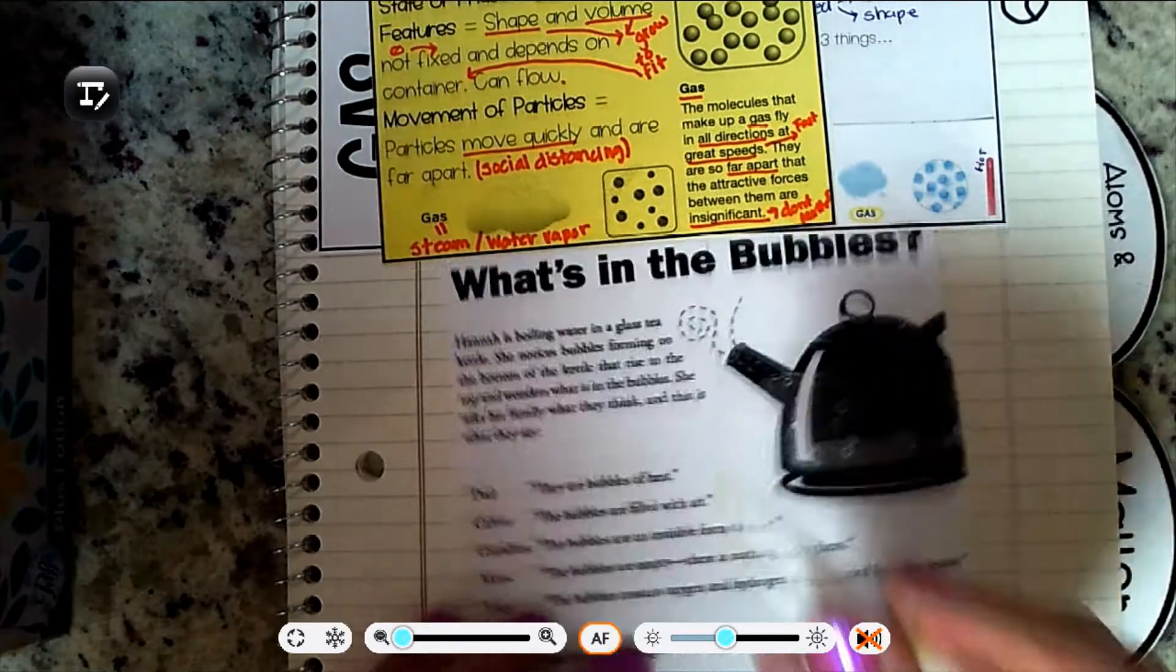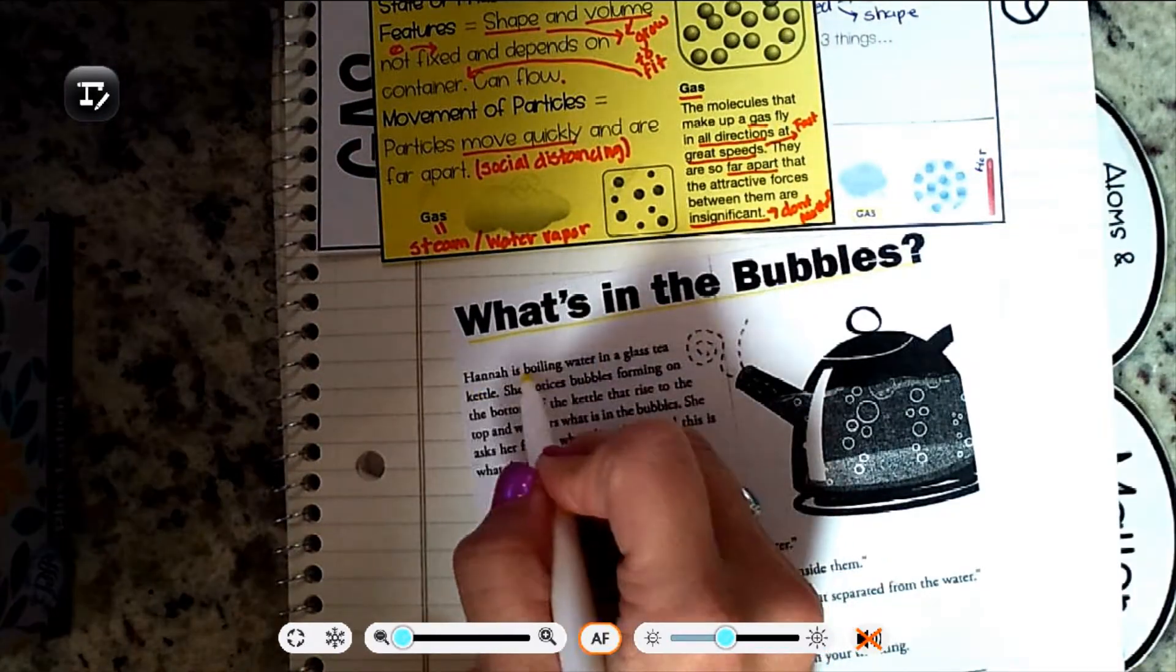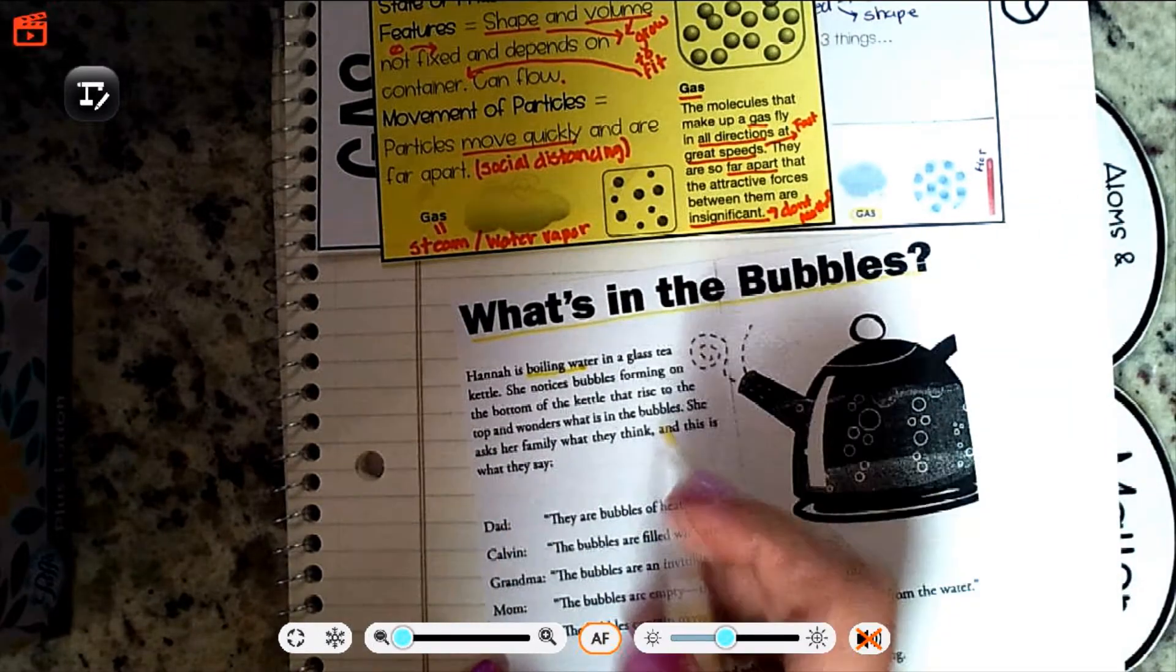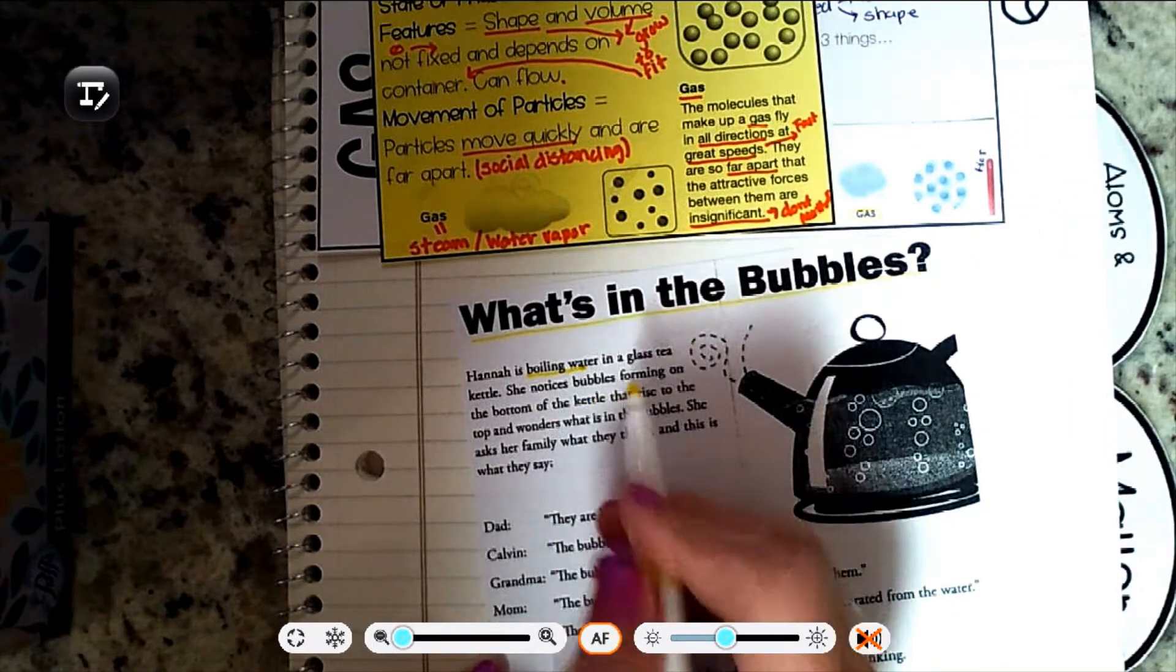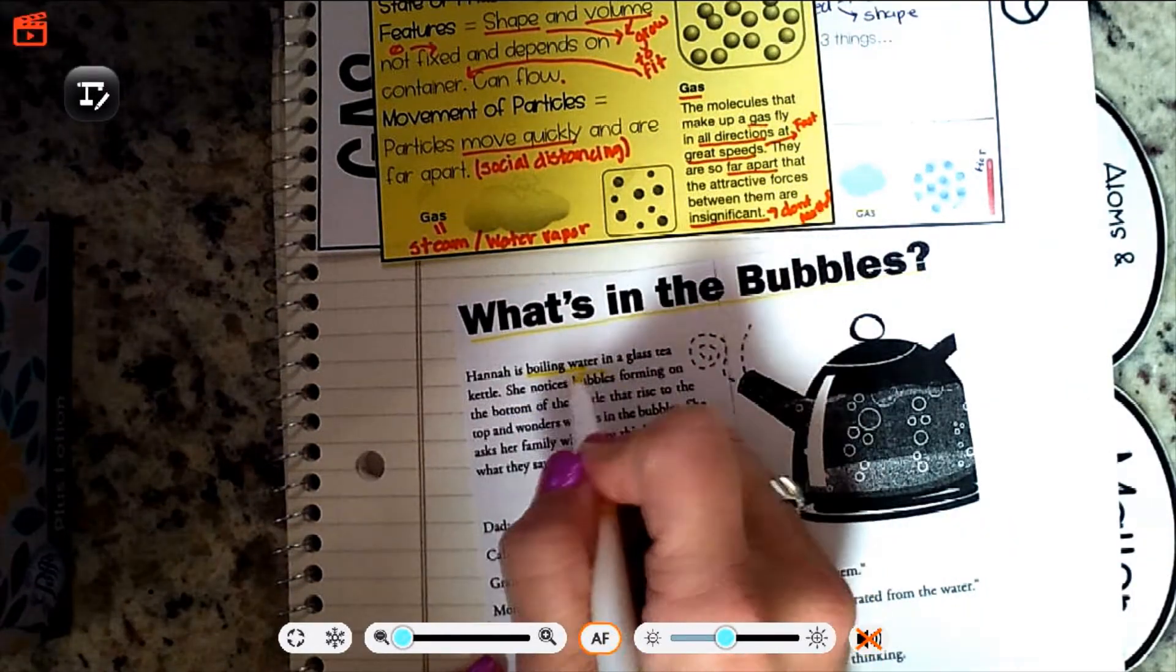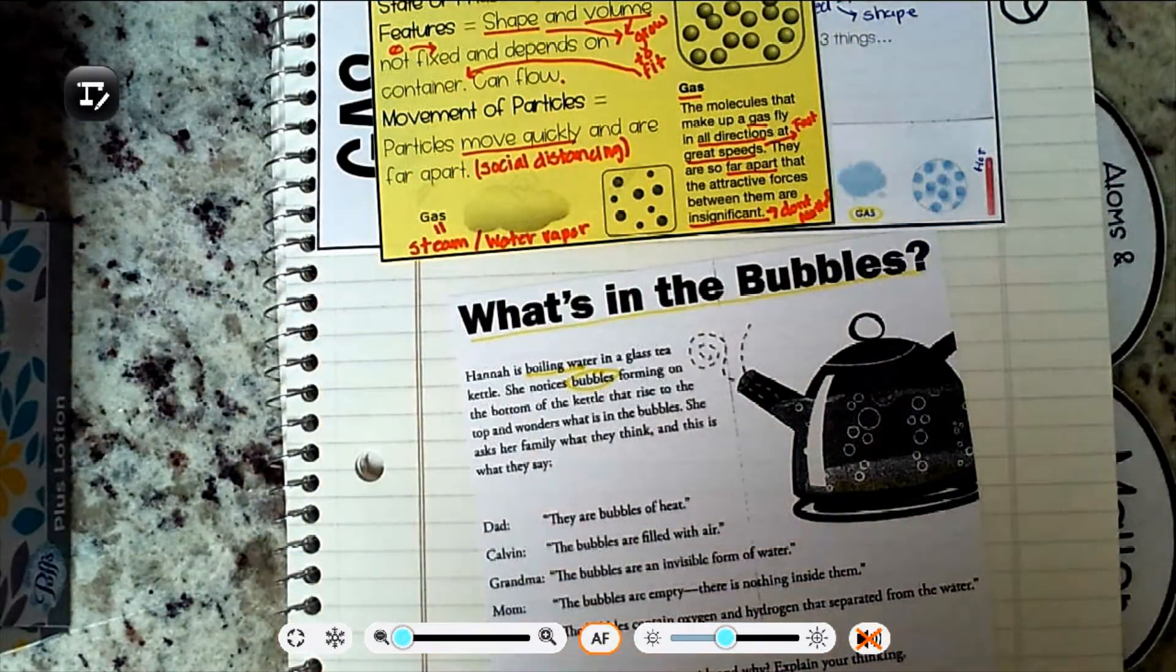So what is in the bubbles? Hannah is boiling water in a glass tea kettle so you can see through. She notices bubbles, nobody has glass tea kettles, bubbles forming on the bottom. There's bubbles forming down here. You can't see my marker because it's yellow. That was silly.